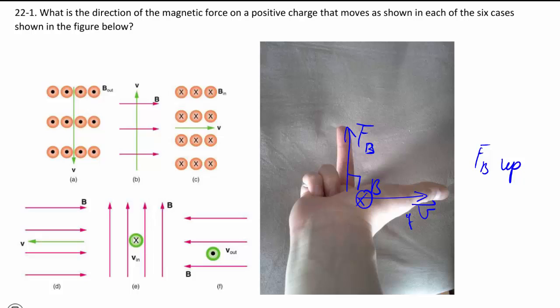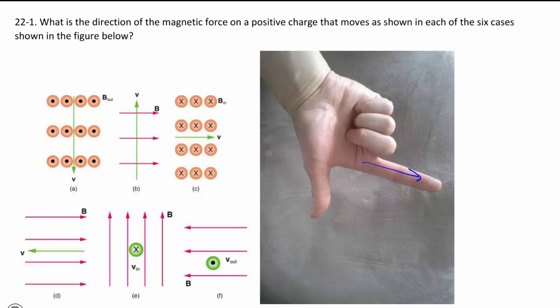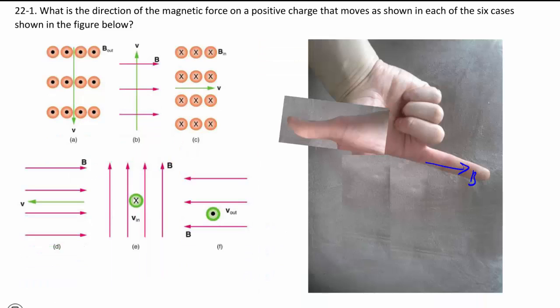And then for part D, well here we have our velocity going to the left, but my magnetic field to the right. So you can try and do it, maybe starting with my B to the left, and if I want my V to the right, I go, ahhh, and really break my thumb so that that happens, which is a good reminder that this does not happen because there's no force.